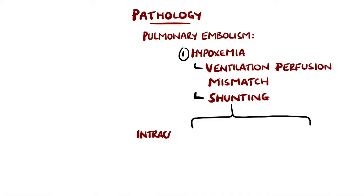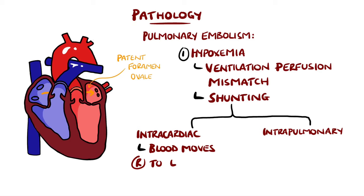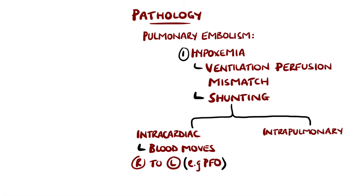Shunting can be intracardiac or intrapulmonary. Intracardiac causes can come from increased pressure in the right side of the heart due to the backflow of blood from the clot. This can cause blood to move from the right side to the left side of the heart, for example through a patent foramen ovale.